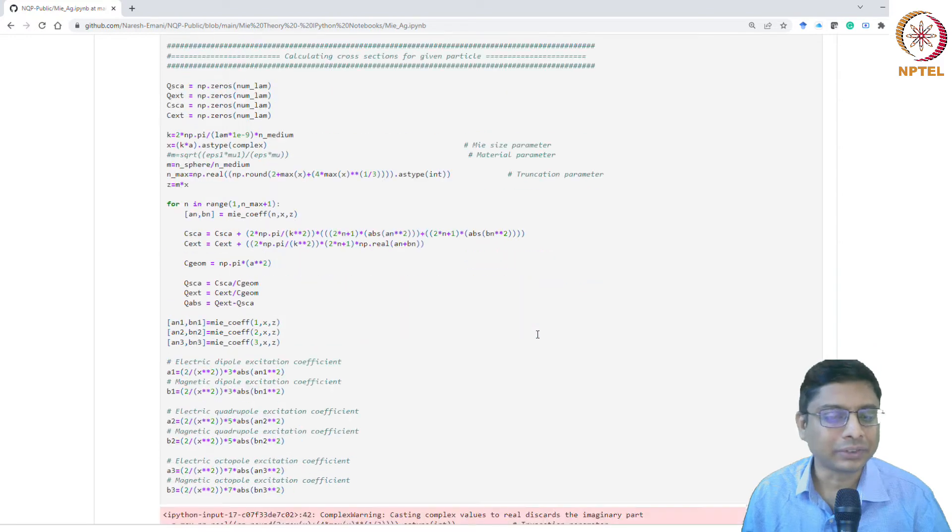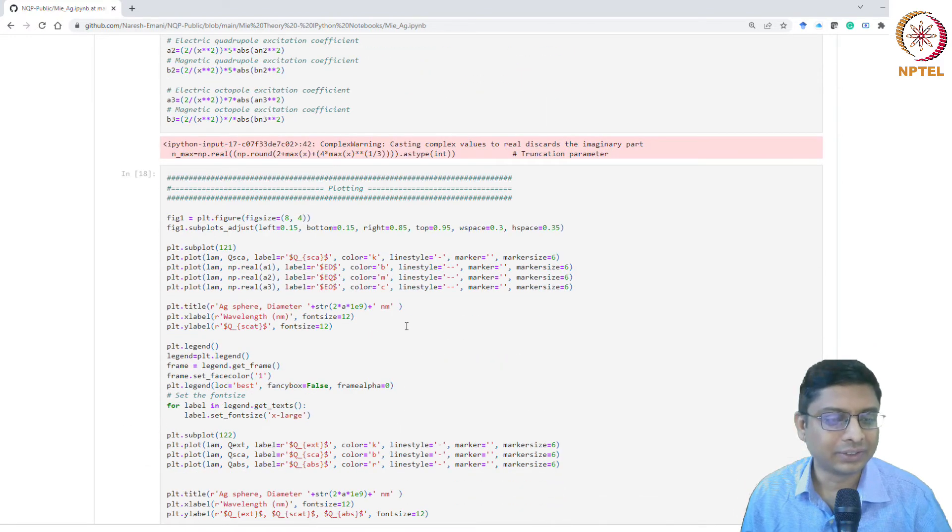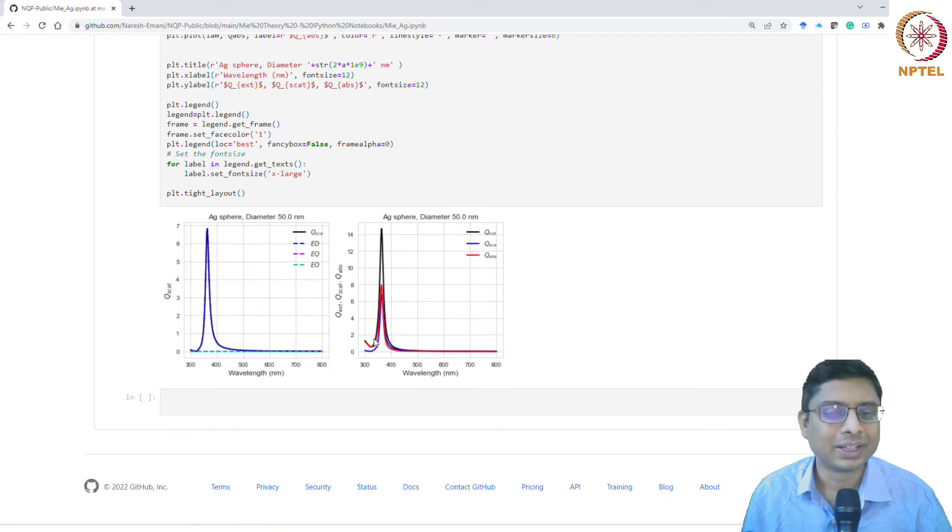Once you know that, you can easily compute the scattering cross sections. The size parameters and all that is explained already. Once you have this, you plot the data. It's basically a lot of text to make it look nice. This is what you finally end up with. If you look at the scattering cross section, you see it's normalized to the geometric cross section, so the number is up to 10 or so. You have extinction, which is basically a sum of absorption and scattering cross section.